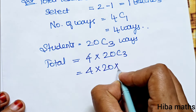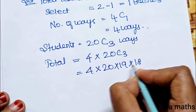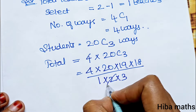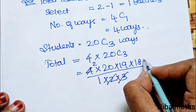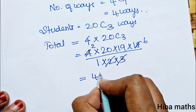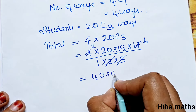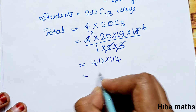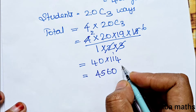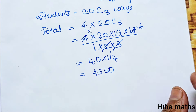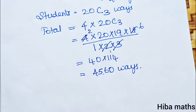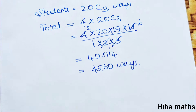Total = 4C1 × 20C3. So, 4 × 20 × 19 × 18 divided by 1 × 2 × 3. Simplifying: 2 twos are 4, 6s are 18, giving 4 × 1140. Result: 1540. We are selecting students and teachers in this manner.